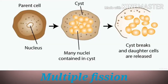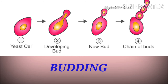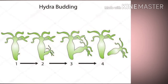In multiple fission, many individuals are formed from a single parent. This type of reproduction by multiple fission occurs during unfavorable conditions. Coming to budding, a growth on the body as a bud that grows to form a nearly identical copy of the parent. When the bud totally grows, it separates from the parent and survives independently. Example: hydra.